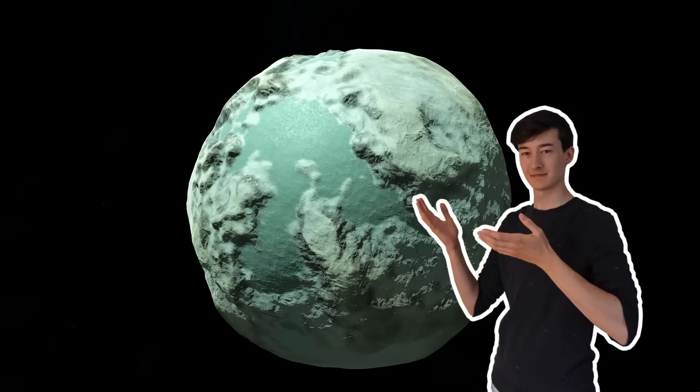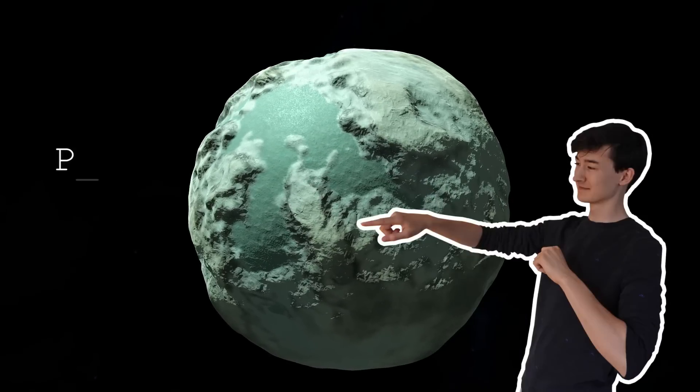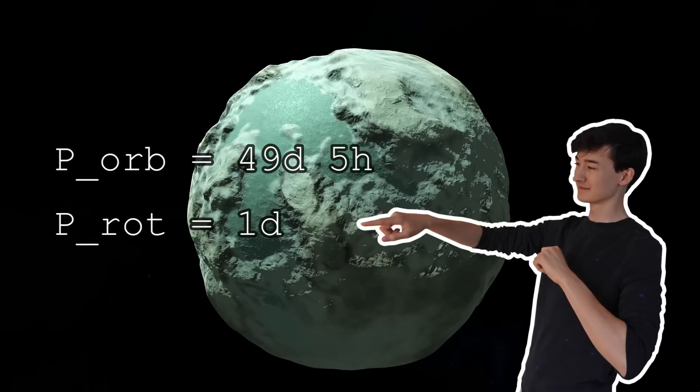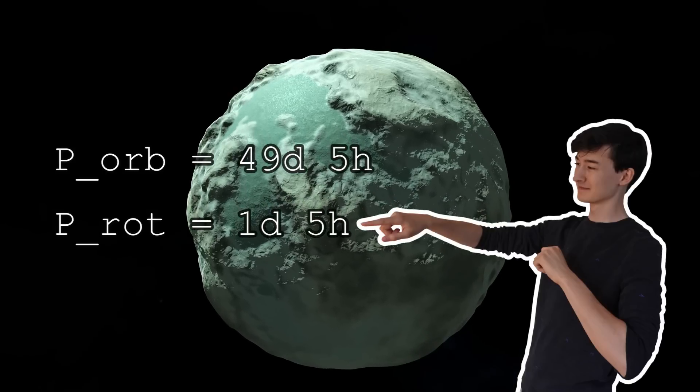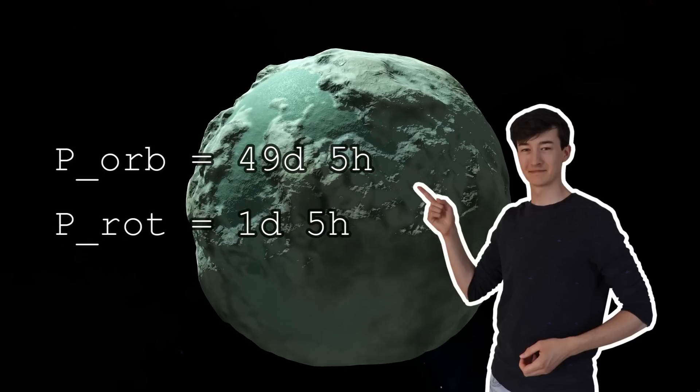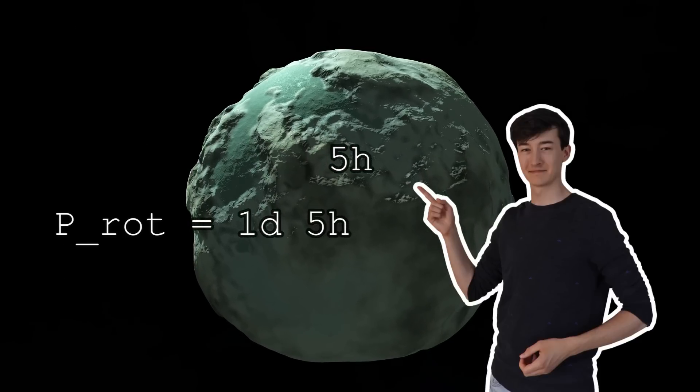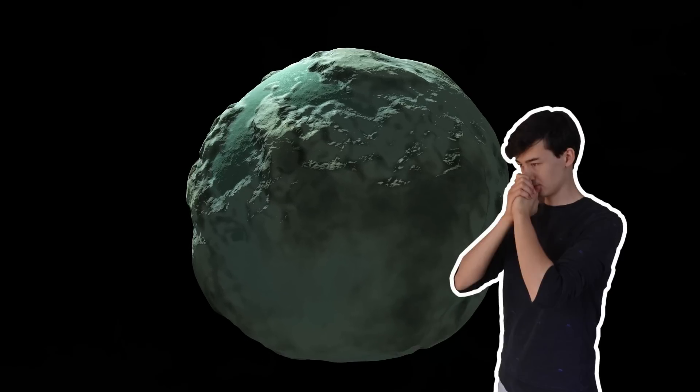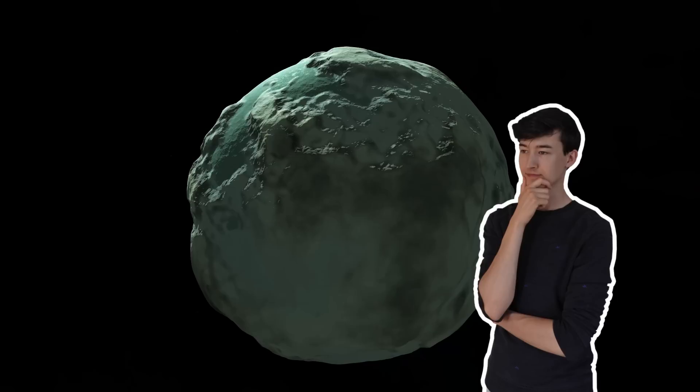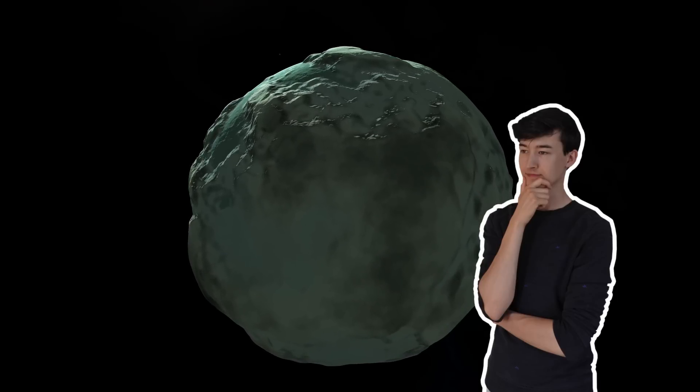So to conclude, Minmus should probably be tidally locked to Kerbin. But apparently it isn't. Its orbital period is about 49 Kerbin days. And its rotational period is about 2 Kerbin days. So that is a much faster rotational period than we would expect if the timescale is around the time that the moon has been around for. Unless… Unless Minmus was only captured by Kerbin recently. Up to a couple of tens of millions of years ago.